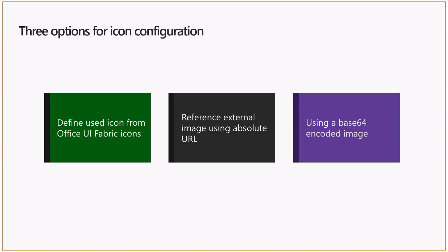For option one, referencing a Fabric icon, it's convenient because you only refer to a string and the icon is there. The icon will also scale appropriately — imagine somebody changes the theme, zooms in the browser, or uses higher DPI because they can't see well. That icon will by itself adapt to all of that, so you don't have to worry about it.